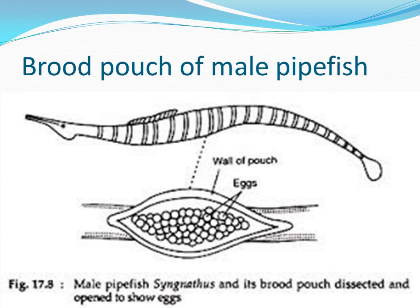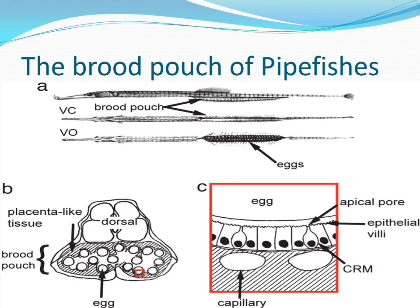In this slide you may see the brood pouch of a male pipefish, dissected and open to show eggs. Males of the broad-nosed pipefish care for offspring by brooding embryos in a brood pouch. Brooding males can absorb nutrients that emanate from embryos, and there is often a reduction in offspring number over the brooding period. This slide also shows the brood pouch of pipefishes, in which placenta-like tissue is present on the dorsal side and the brood pouch is on the ventral side, containing various eggs, capillary and epithelial villi, and an apical pore.